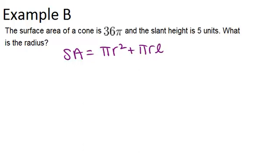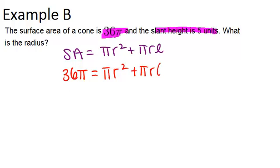Let's substitute in the information that we were given. We were given that the full surface area is 36 pi, and the slant height is 5. So that means we have 36 pi equals pi r squared plus pi r times 5. Let's try to simplify this a little bit. We get 36 pi equals pi r squared plus 5 pi r.